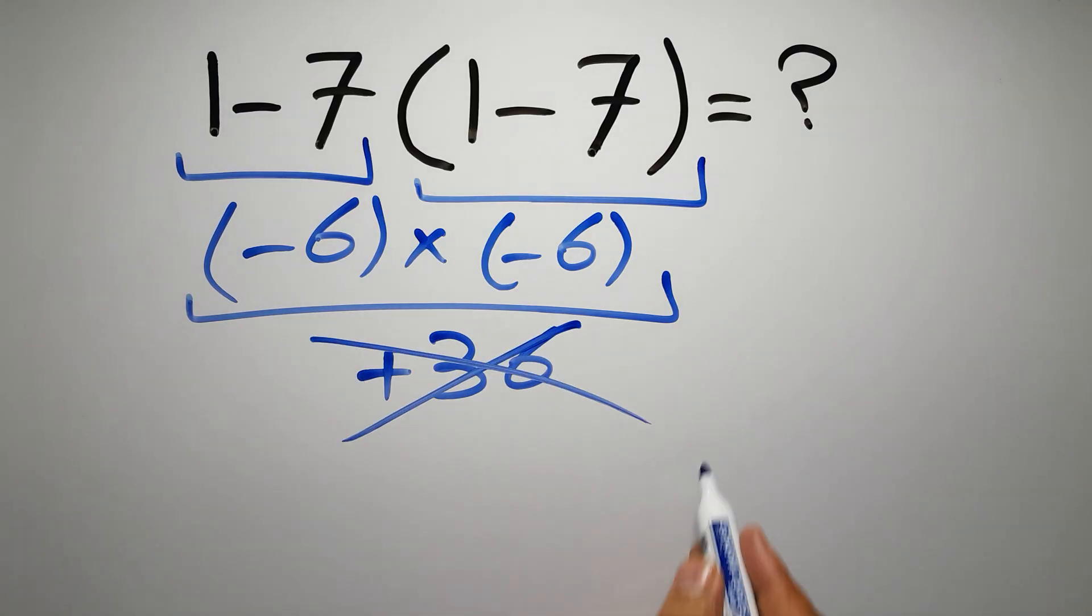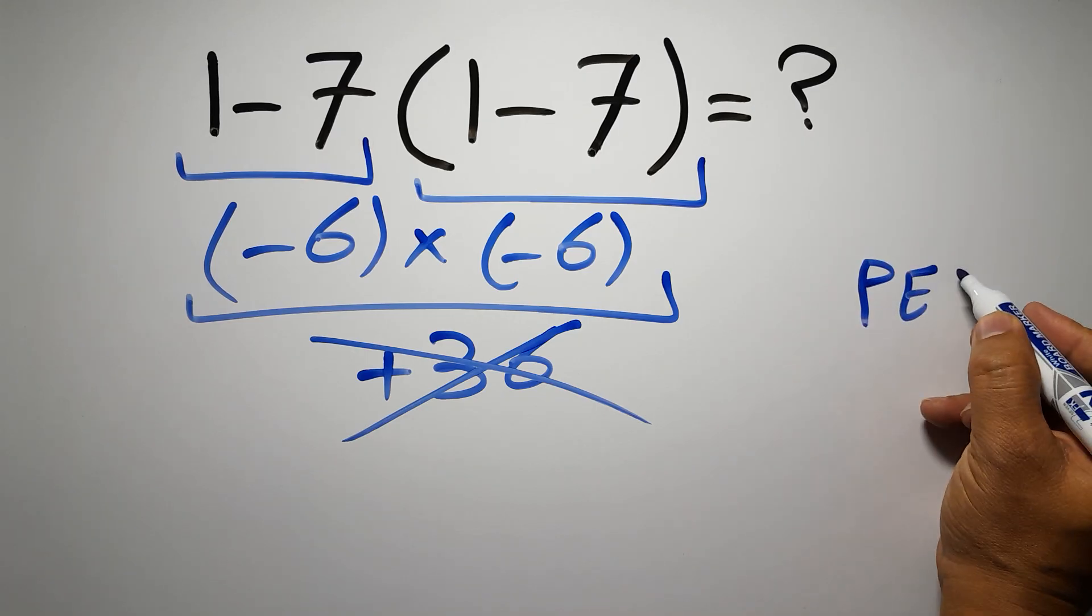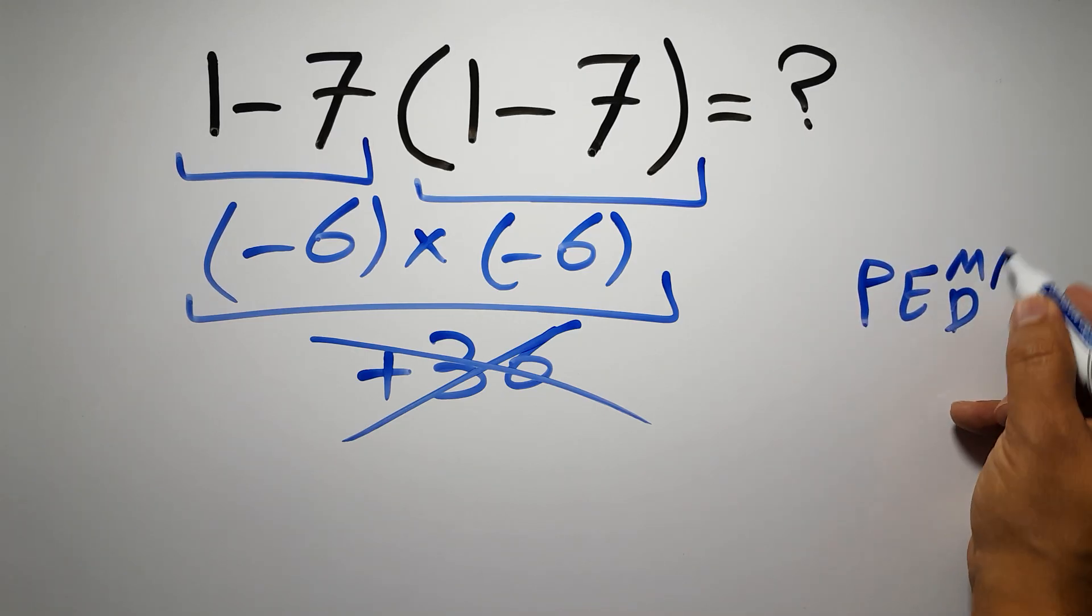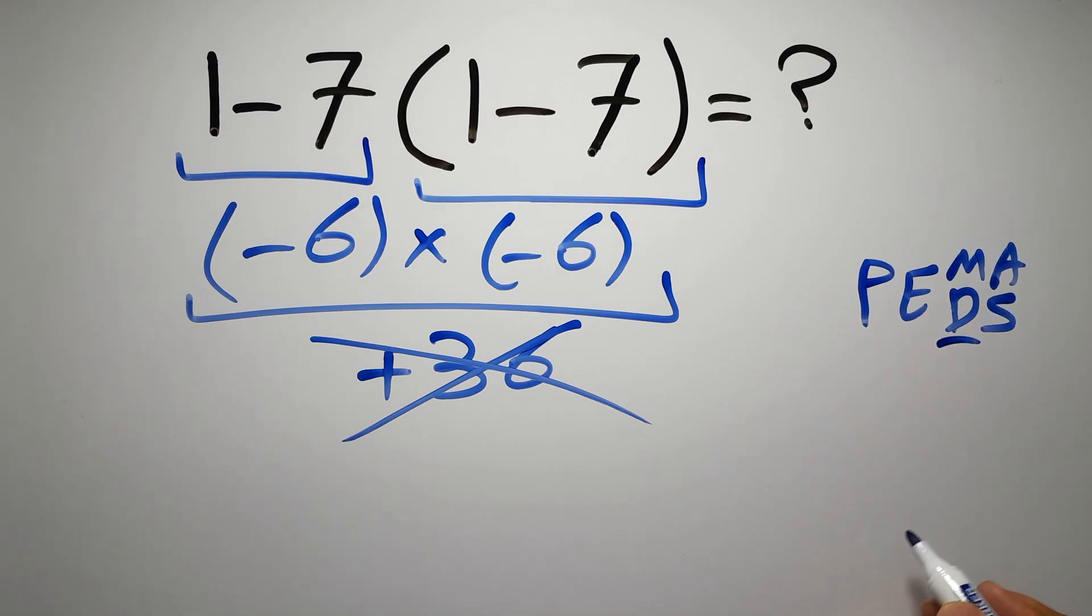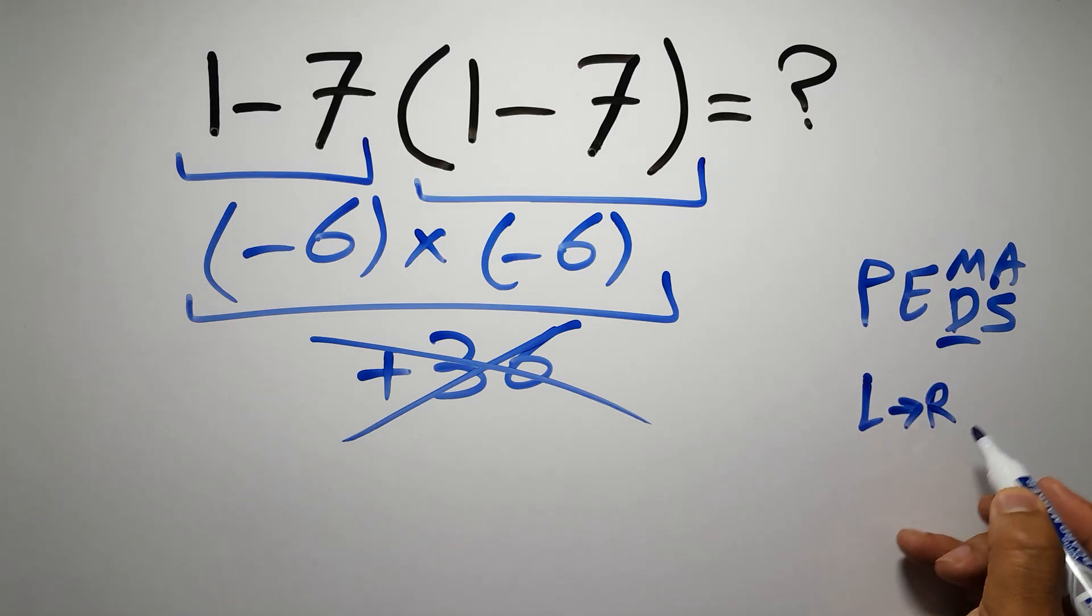But this answer is not correct, because according to the order of operations, first we have to do parentheses, then exponents, then multiplication or division, and finally addition or subtraction. Remember that multiplication and division have equal priority and we have to work from left to right, and the same applies to addition and subtraction.